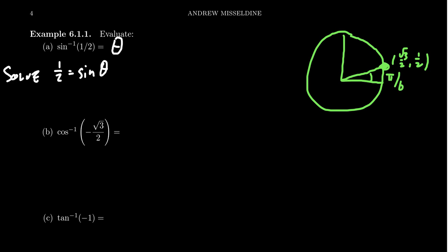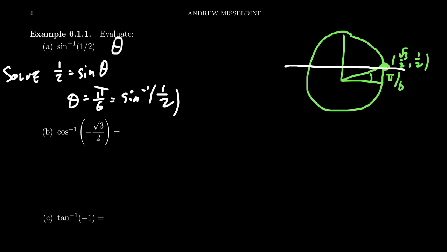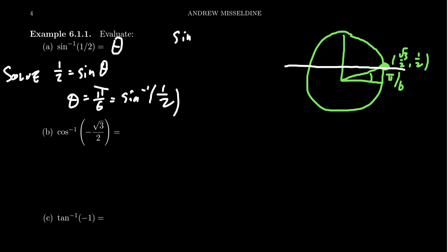Computing sine inverse of 1/2 comes down to solving 1/2 = sin(θ). Thinking in terms of the unit circle, we're looking for the y-coordinate equal to 1/2, so we can see that θ = π/6. In other words, sine inverse of 1/2 equals π/6. Now, the equation 1/2 = sin(θ) technically has two solutions: π/6 and 5π/6. But the range of sine inverse is restricted — sine inverse always sits between +π/2 and −π/2, so the calculator gives only π/6, not 5π/6. We'd need reference angles to find that other solution.